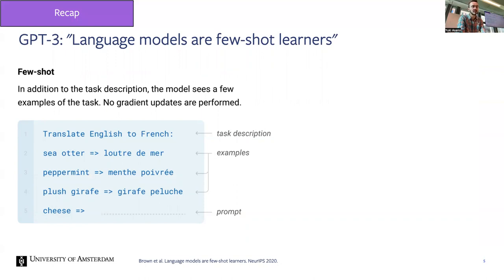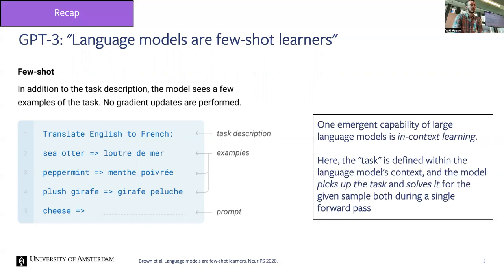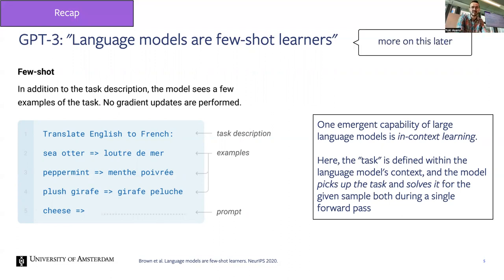We also looked at longer context and different task types. There were some questions in the tutorial about few-shot learning, so I want to revisit that here, because we'll be discussing it a lot more today — specifically this in-context learning ability. This ability to do few-shot learning within a single forward pass emerges in large language models as an emergent ability.